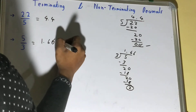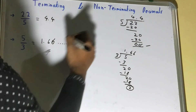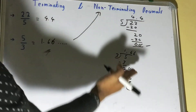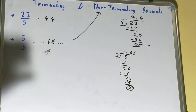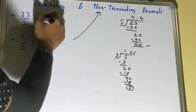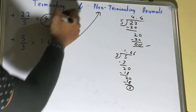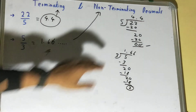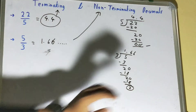We can say it is a non-terminating decimal. It doesn't end — it will go on. You can keep dividing and you will keep getting remainder 2; you'll never get remainder 0. But in the case of terminating decimals, you get a fixed decimal value and you get the remainder as 0. So terminating decimals are those where you get remainder 0 when you divide, but in the case of non-terminating decimals you don't get remainder 0.